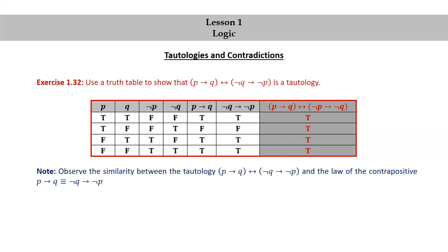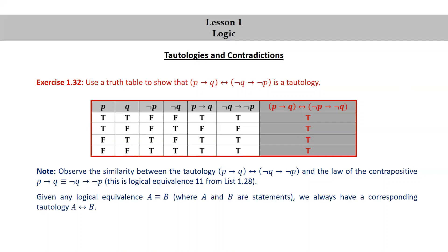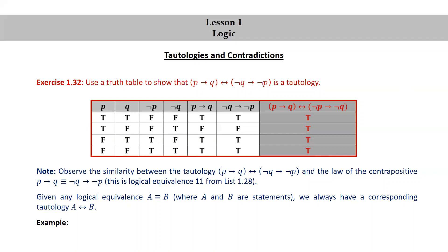Observe the similarity between the tautology p implies q if and only if not q implies not p, and the law of the contrapositive, which says p implies q is logically equivalent to not q implies not p. This is logical equivalence 11 from list 1.28. Given any logical equivalence A logically equivalent to B, where A and B are statements, we always have a corresponding tautology A if and only if B. As an example, from De Morgan's first law, the negation of p and q is logically equivalent to not p or not q, so the statement not (p and q) if and only if not p or not q is a tautology.